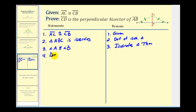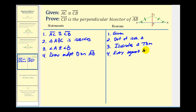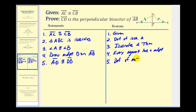For step four, we'll draw the midpoint. If we define D as the midpoint, we know segment AD is congruent to segment DB — this is by definition of a midpoint. Now we have enough information to state that triangle ACD is congruent to triangle BCD by side-angle-side.